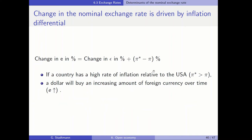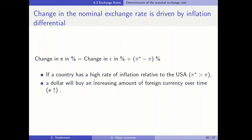This relationship tells you that if a country has a high rate of inflation relative to the U.S. — if one country has a higher inflation rate, pi star is larger than pi — then a dollar will buy an increasing amount of foreign currency over time, so the exchange rate will increase. In case that the inflation differential is positive and the inflation rate in the foreign economy is higher than the inflation rate in the domestic economy in the U.S., then the exchange rate will increase.